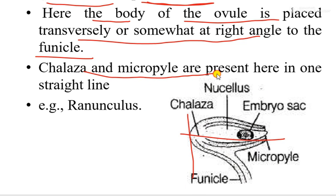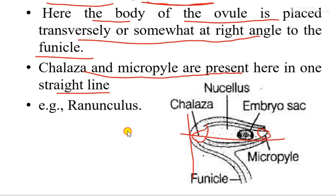In the hemitropous ovule, the chalaza and micropyle are present in one straight line — you can see this in the diagram. This is the micropyle and this is the chalaza; they lie in one straight line. This type is commonly found in Ranunculus.